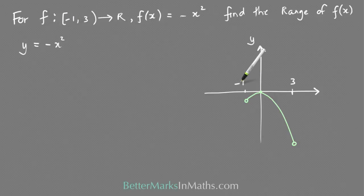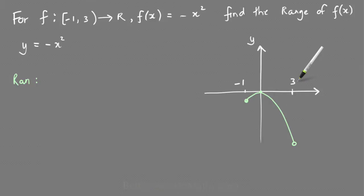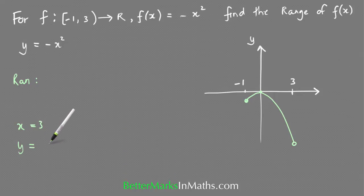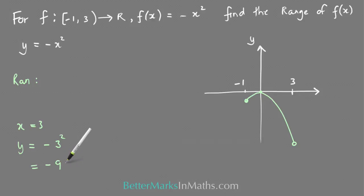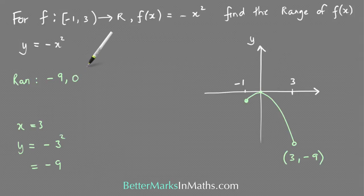The square bracket on −1 means that x-value is included, so that point should be colored in. The 3 is not included, so that needs to be an open circle. The lowest y-value occurs at x = 3: substituting gives y = −3² = −9. So the lowest value is −9 and the coordinates there are (3, −9).